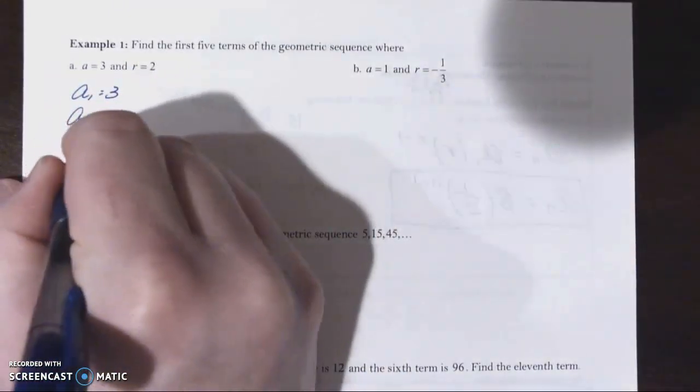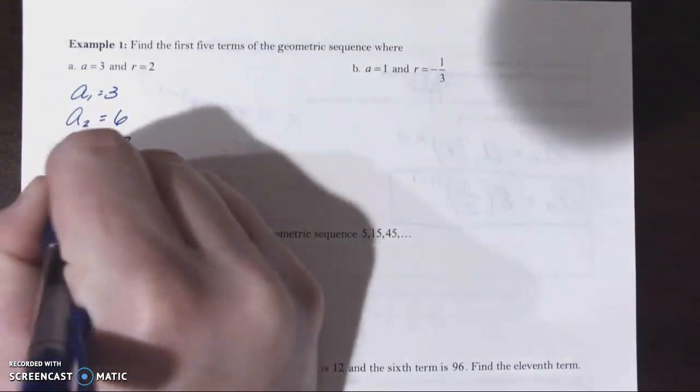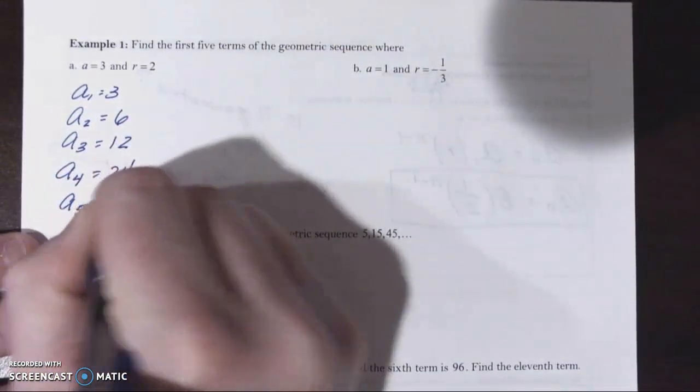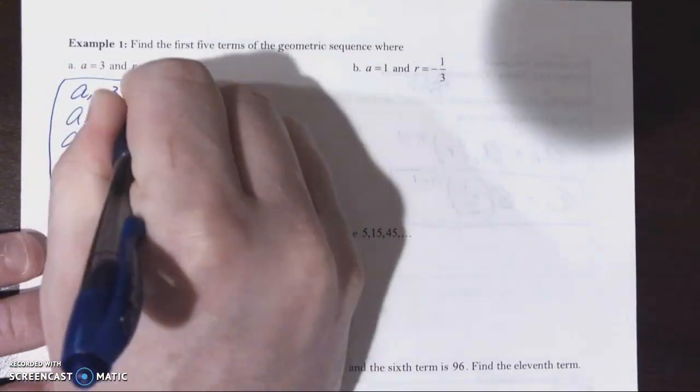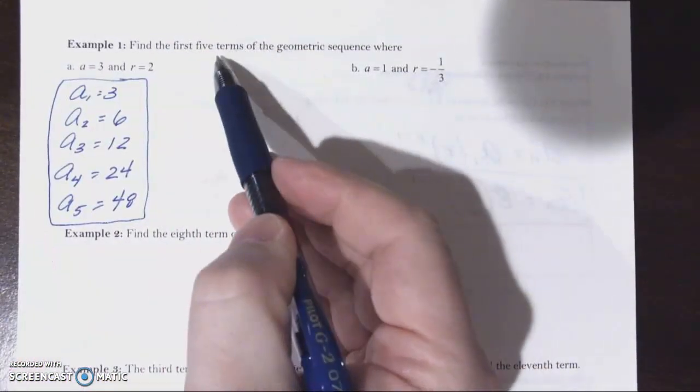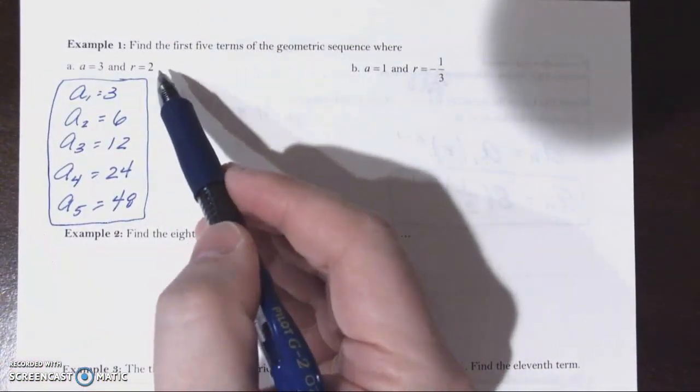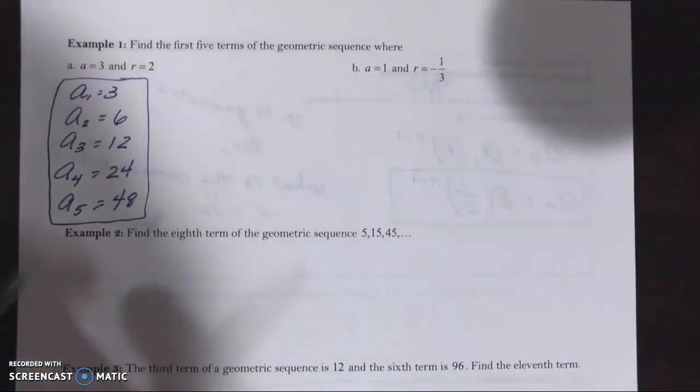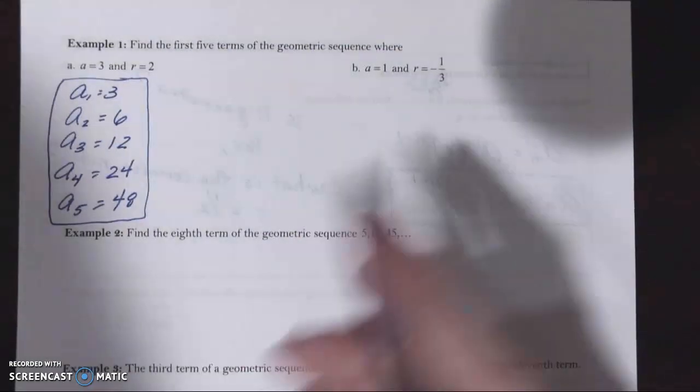So the second term is six. The third term, 12. The fourth term, 24. And the fifth term would be 48. Now if we were asked for the 31st term here, we might want to create the formula and then plug in a 32 for n. But we weren't asked for that.